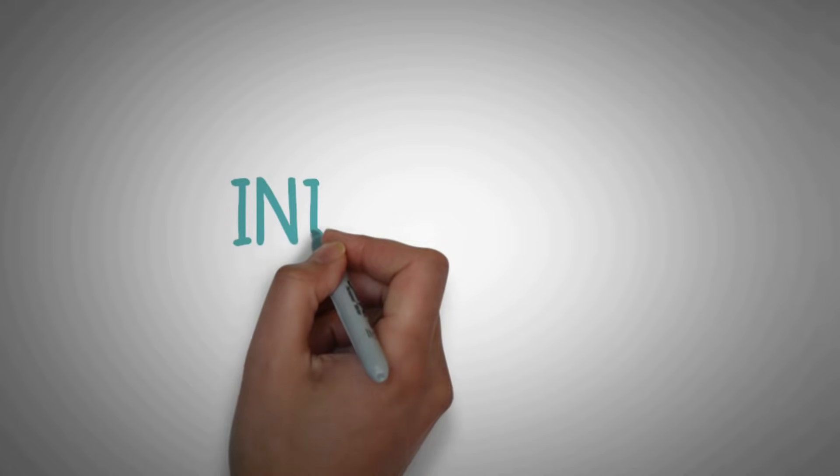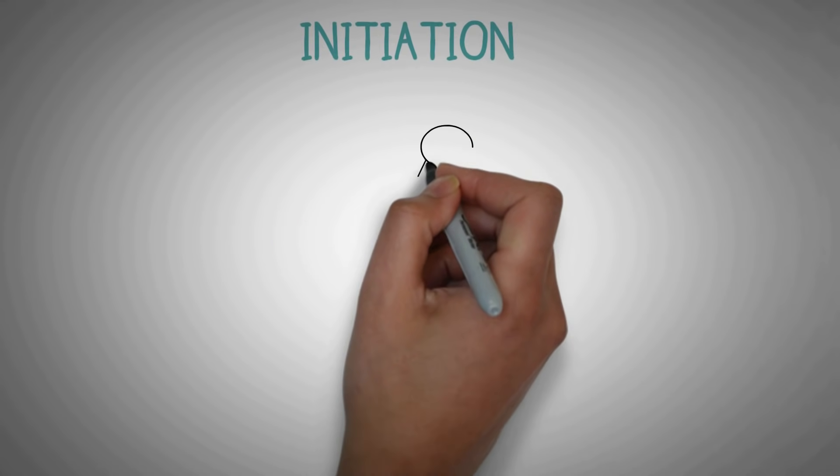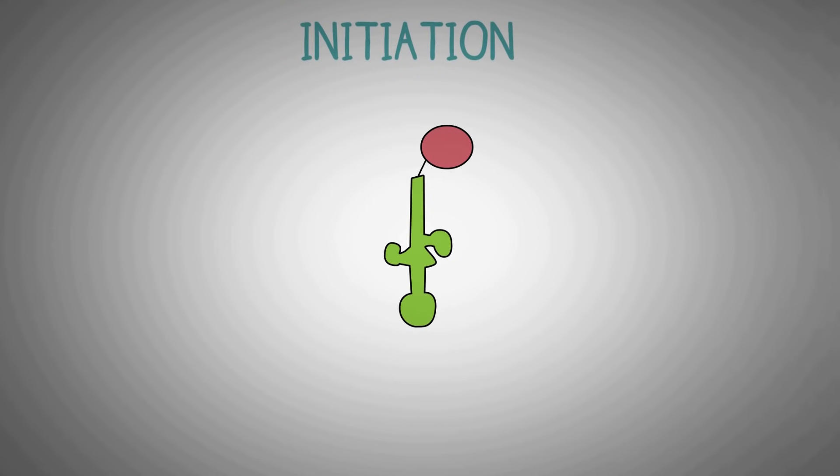Now, let's get into the details of translation. So, the first step in translation is known as initiation. This is a transfer RNA or tRNA which has an amino acid methionine bound to it.